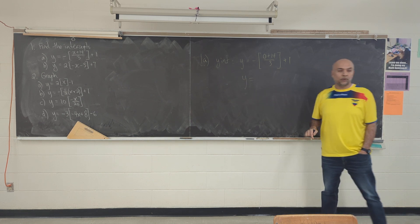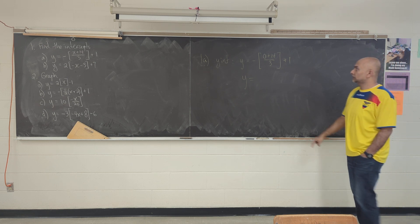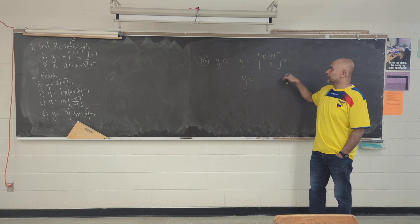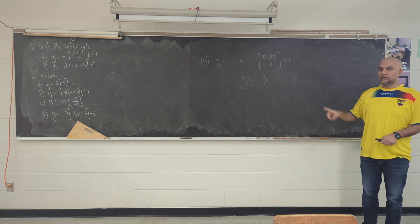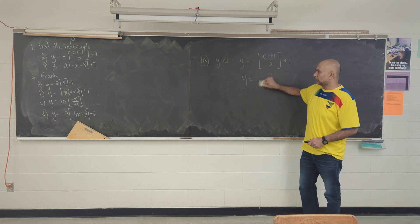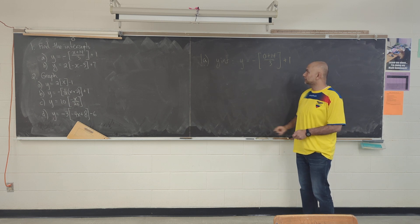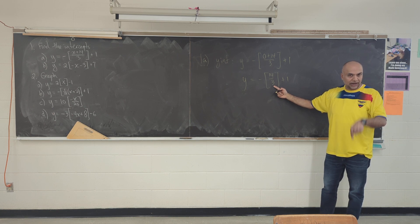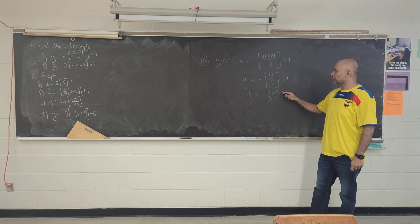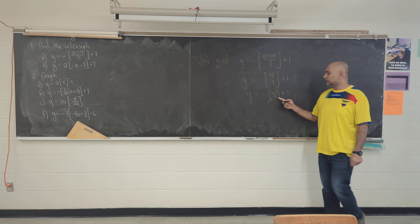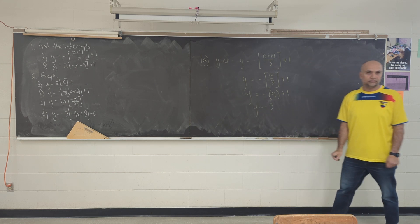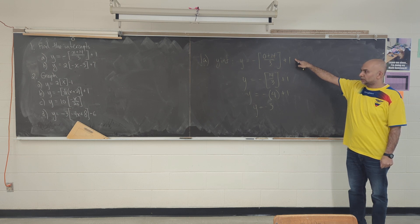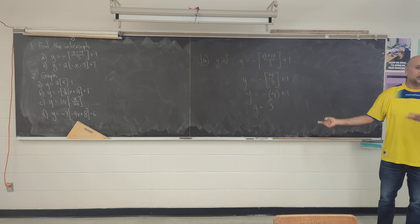If you're trying to find the y-intercept, you're not going to replace the y with 0, because then there's no more y to find. So whatever intercept you're trying to find is the other variable that you're replacing. We replace x with 0 and do the calculation. Inside the brackets I get 14 over 3, which is 4.6. Rounded down that's 4. The negative times positive 4 plus 1 gives me negative 3. So there's my y-intercept: negative 3.